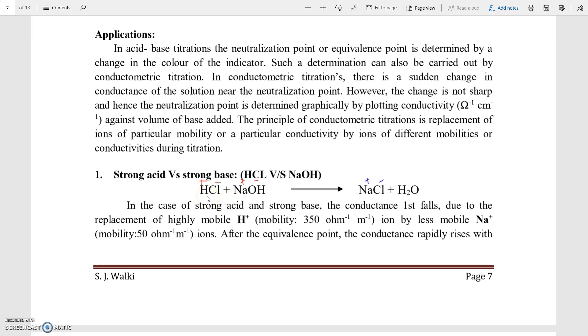Here, mobility of H plus ion is 350 per ohm per meter. But, the mobility of Na plus ion is 50 per ohm per meter. Because of this, highly mobilized ion is replaced by Na plus ion which is low mobilized. Hence, there is thereby decrease in the conductance is observed.